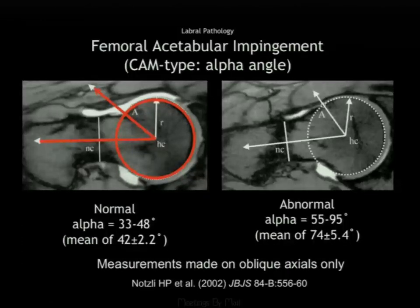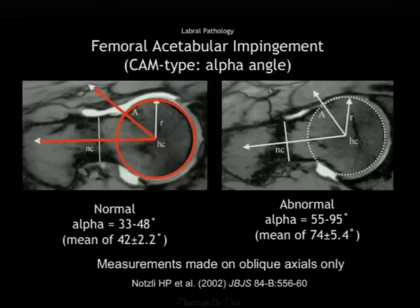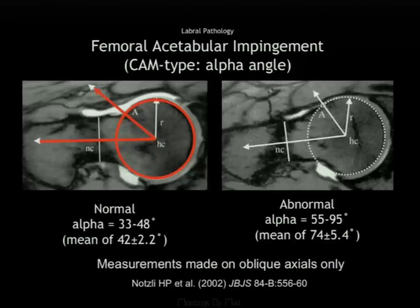In our practice, the alpha angle is an important measurement. Some payers for arthroscopic hip surgery will not pay for the surgery unless a positive alpha angle is documented in the report. That is a key reason we routinely perform and document this measurement.